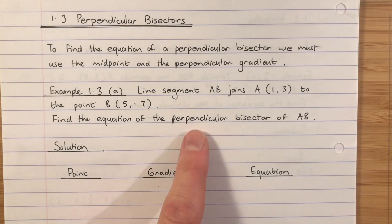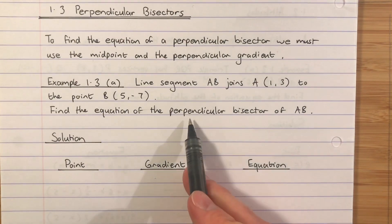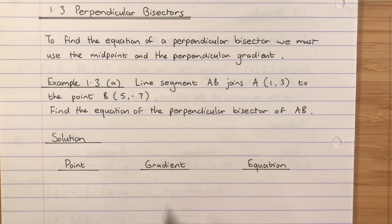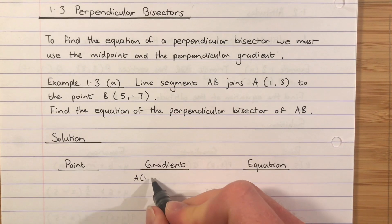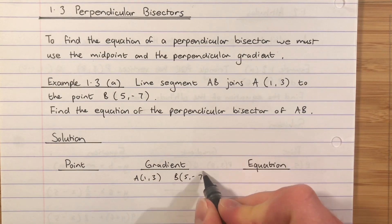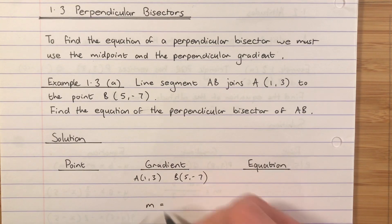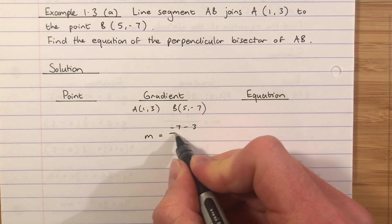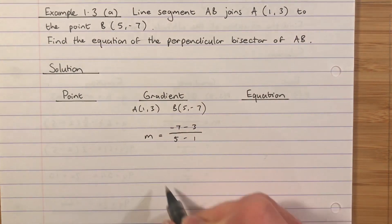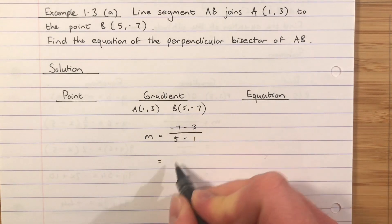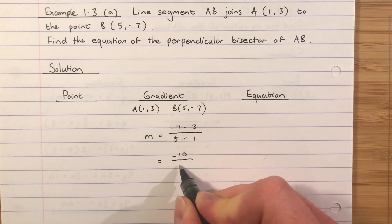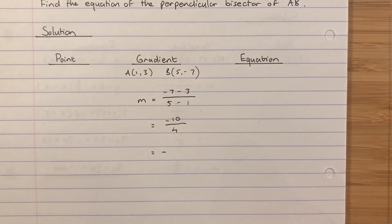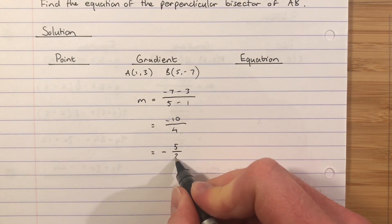Right, so the type of line we're finding is a perpendicular bisector. That means we're doing the perpendicular gradient. And we're bisecting, which means we're finding the midpoint. So let's do it in order. Perpendicular gradient first. We've been given the two points, A and B. The gradient between A and B, small m for gradient, is going to be -7 subtract 3 over 5 subtract 1. -7 subtract 3 is -10. 5 subtract 1 is 4. A negative over a positive means the whole thing will be negative. These will both divide by 2. So I will get -5/2.